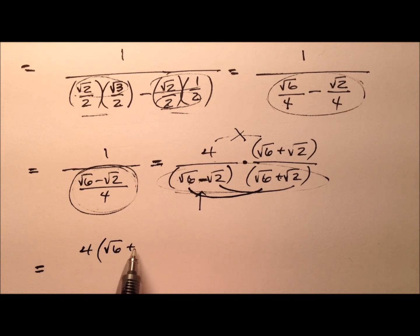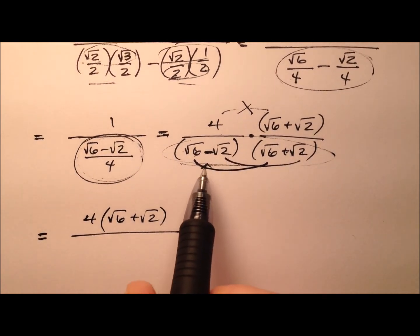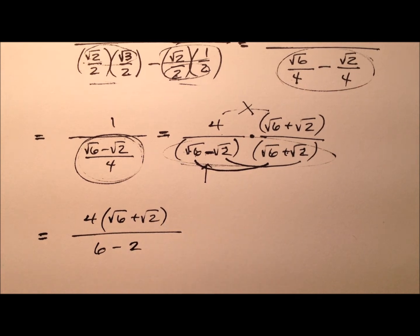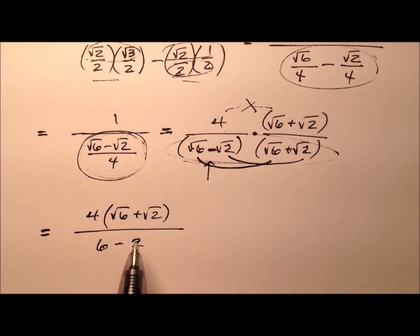So I have 4 times this quantity, this expression here. And in the denominator, the square root of 6 times the square root of 6 is 6, and the square root of 2 times the square root of 2 is 2. And we're subtracting there. 6 minus 2 is 4. And these 4s cancel.